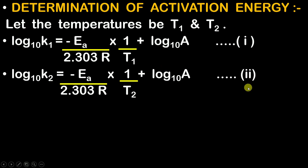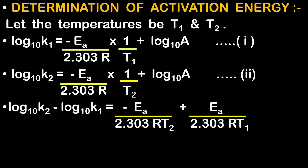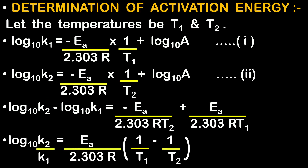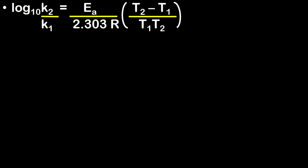The next step is to subtract equation 1 from equation 2. After subtracting, we apply log M − log N = log(M/N), giving us log(K2/K1). On the right-hand side, we take E_A/(2.303R) as common, leaving (1/T1 − 1/T2) in brackets. After cross-multiplication, we arrive at the final formula: log(K2/K1) = (E_A / 2.303R) × (T2 − T1)/(T1 × T2). This formula is used when two temperatures are given to find E_A, K1, or K2.